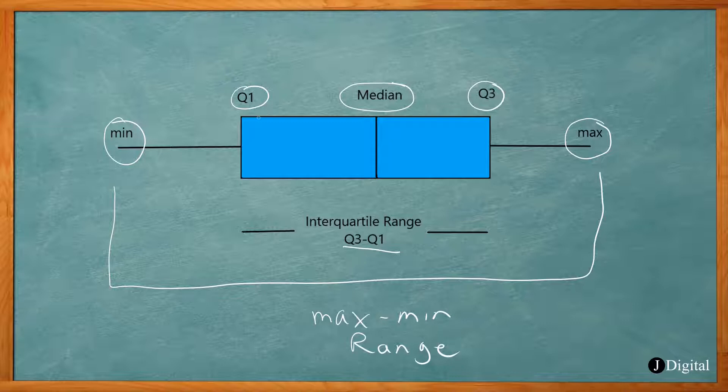And usually the most important thing is the median which is the line inside the box. And it doesn't need to be in the middle. It can be anywhere within here. So it's the median of the data set.